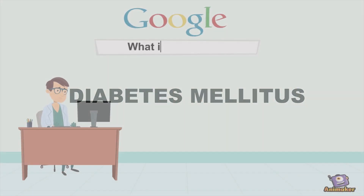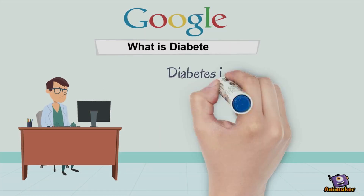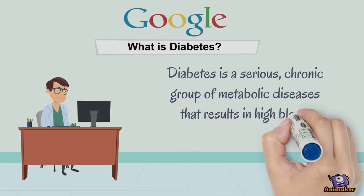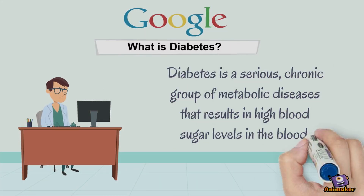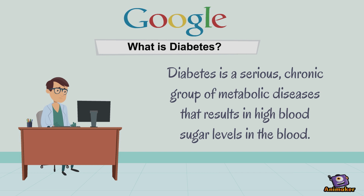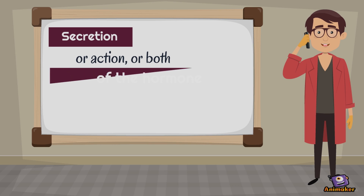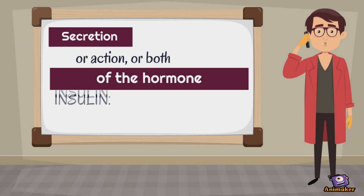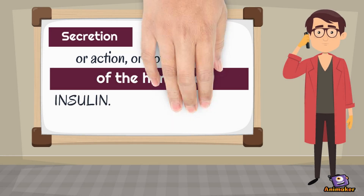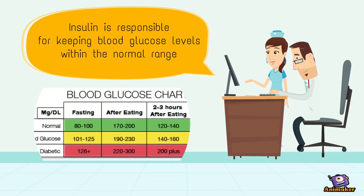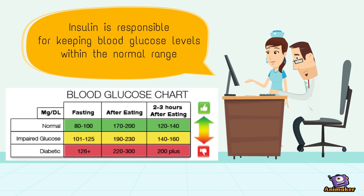What is diabetes? Diabetes is a serious chronic group of metabolic diseases that results in high blood sugar levels in the blood. This affects the secretion or action, or both, of the hormone insulin. Insulin is responsible for keeping blood glucose levels within the normal range.